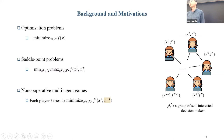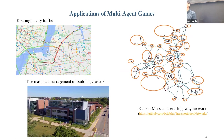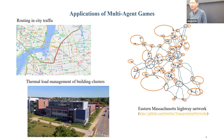These players are self-interested in the sense that they are only interested in minimizing their own objective function. There's no coordination among them. The first example is driving in city traffic, where each driver is a player with the goal of reaching a certain destination. The objective function to be minimized is the time it takes to reach the destination. Each driver makes routing decisions, and the travel time depends on other drivers' decisions as well, due to traffic congestion caused by drivers taking the same route.